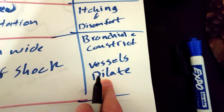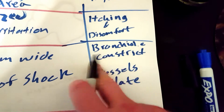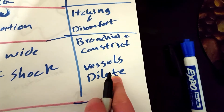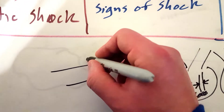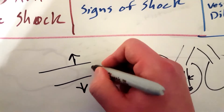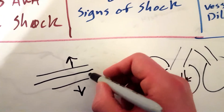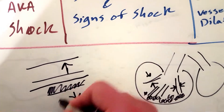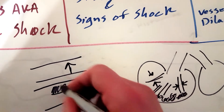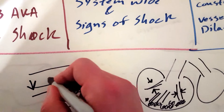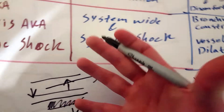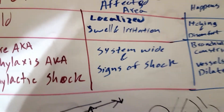Your bronchioles are going to constrict and your vessels will dilate. If your vessels dilate, they get bigger — your volume stays the same but now your tank increases in size, so the pressure goes down. Blood pressure goes down and blood flow slows down because of vascular dilation.